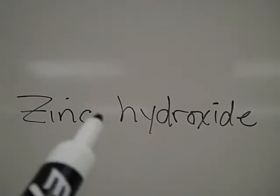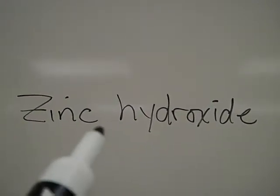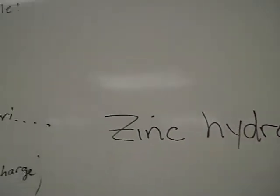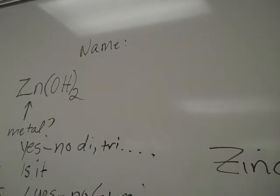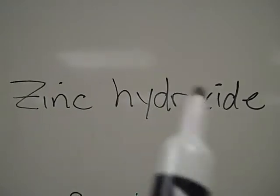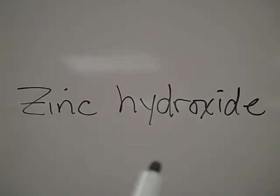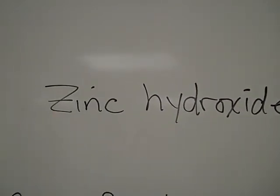Zinc hydroxide. No roman numeral II because zinc is always plus two. No dihydroxide because everybody knows it'll take two negative one charged hydroxide ions to match up with the plus two zinc.